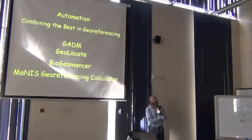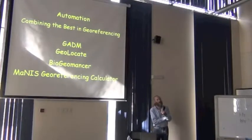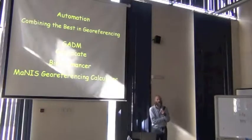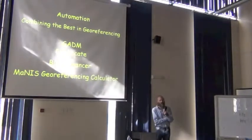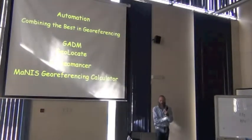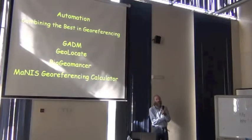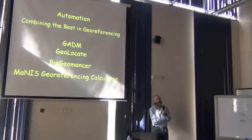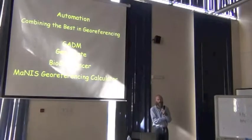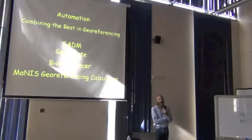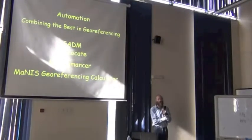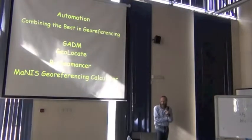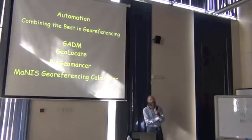In iDigBio, only a subset of institutions were chosen to do the georeferencing rather than all of the institutions. Those institutions were chosen based on their previous expertise — they were the best 7 out of the 20 that worked for Manus. We picked the best, the most efficient, and that contributed some to the speed.